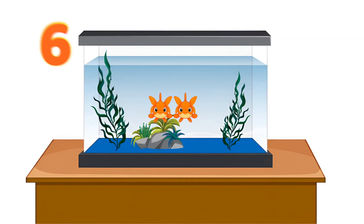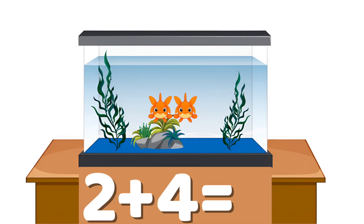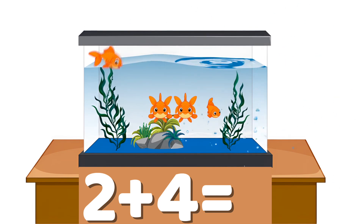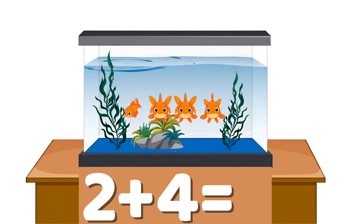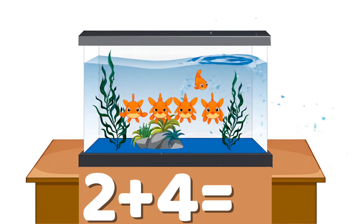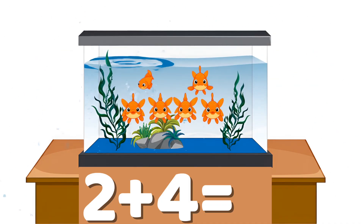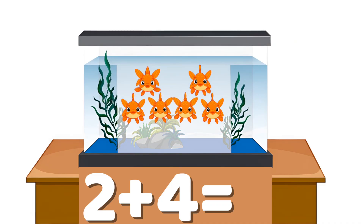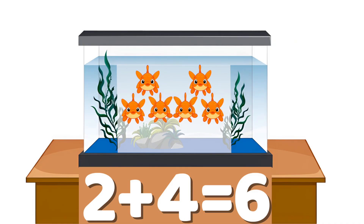Example number six: two plus four. Two fish are in the tank. Four more fish swim into the tank. Now count with me: one, two, three, four, five, six. Two plus four equals six.